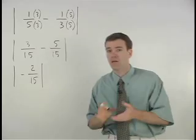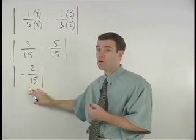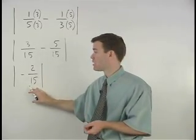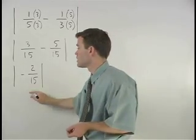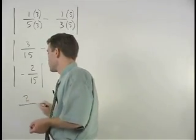And remember, the absolute value of a number is just the positive version of that number. So the absolute value of negative two-fifteenths is positive two-fifteenths.